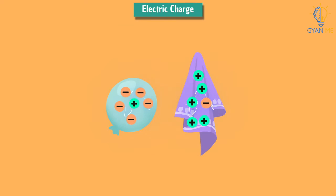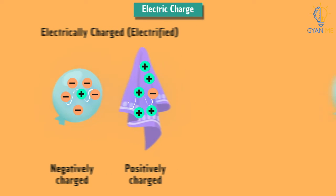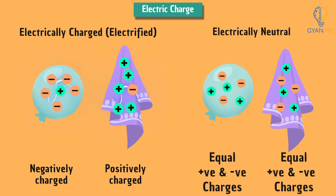If an object possesses an electric charge, it is said to be electrified or charged. When it has no charge, it is said to be electrically neutral.